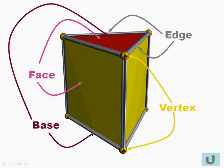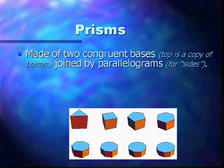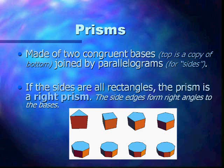Here they are all together. Prisms are made of two congruent, which means equal bases. Top is a copy of the bottom, joined by parallelograms for sides. If the sides are all rectangles, the prism is a right prism. The side edges form right angles to the bases.